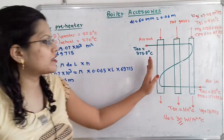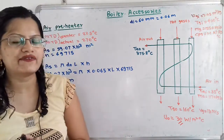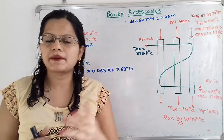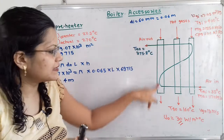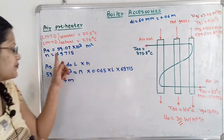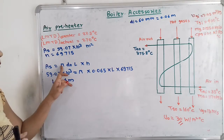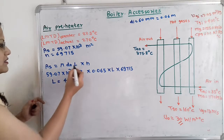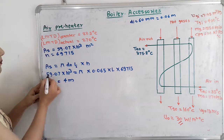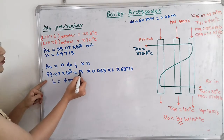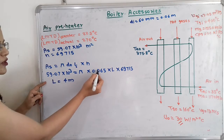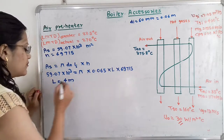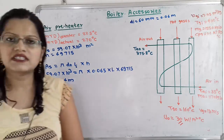Now we find the length L using the total surface area formula: AS equals pi times outside diameter DO times L times N. Substituting AS equals 59.07 times 10 raised to 3, DO equals 0.065 meter, and N equals 69,750, we solve for L. The calculated length of the tube is equal to 4 meter.